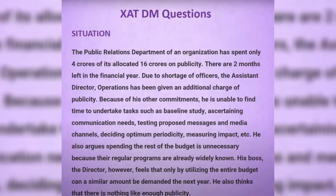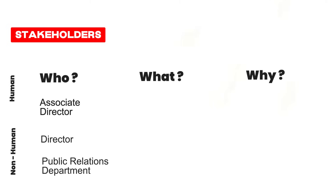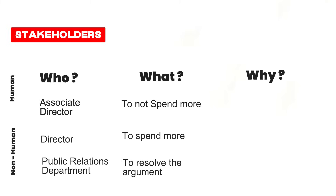Let's start with the decision making set. You can pause and read the complete set, then solve it along with me. Now let's apply the WHO, WHAT, WHY framework. For WHO, the stakeholders in this case are the associate director and the director — those are the two human stakeholders. One that many people miss is the non-human stakeholder: the public relations department itself, which is important because the entire argument involves it.